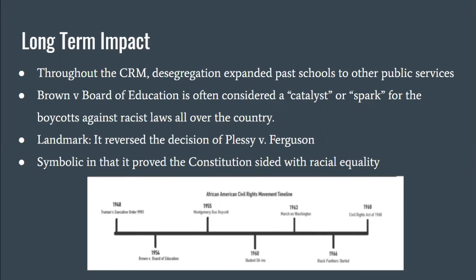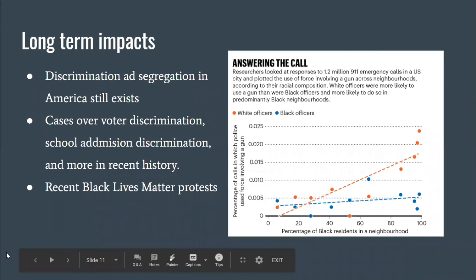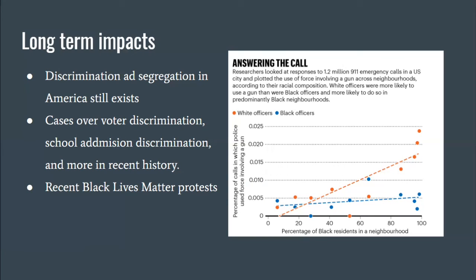For more long-term impact, discrimination and segregation in America still exist, and there have been many cases of voter discrimination, school admission discrimination, and in more recent history, other related cases. The fight is still ongoing, and in light of recent movements like Black Lives Matter, arguments surrounding systematic racism and discrimination are still continuing, fighting for equality.